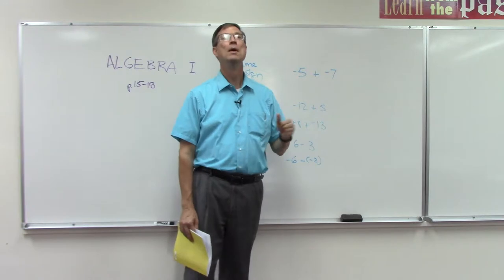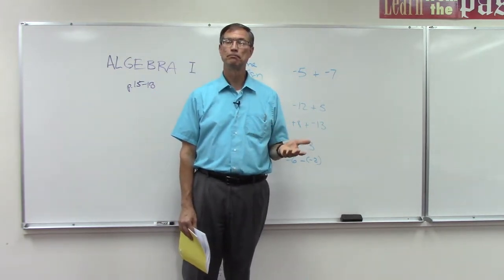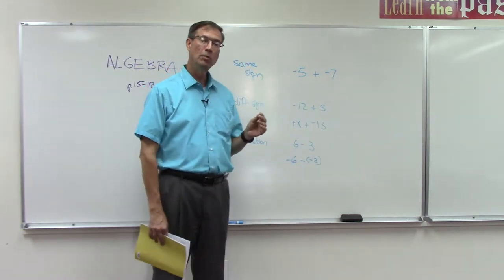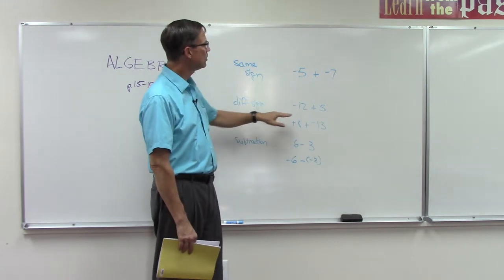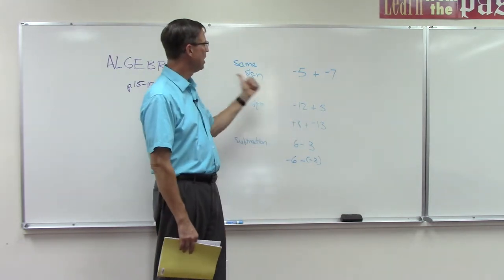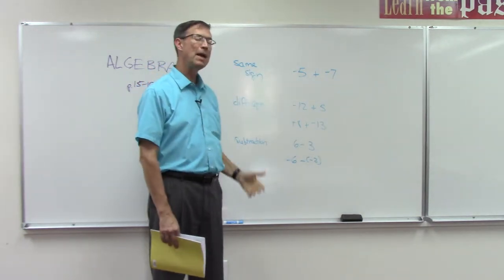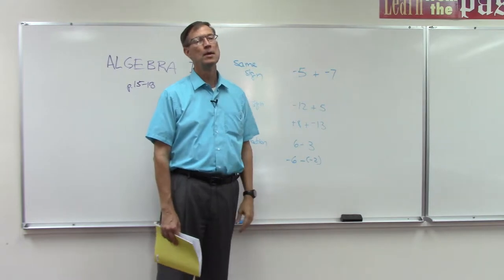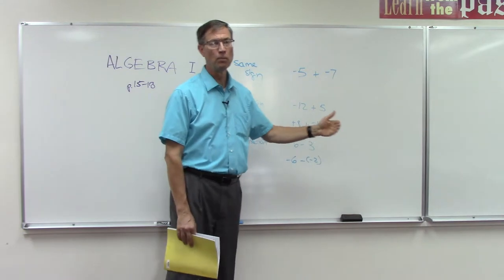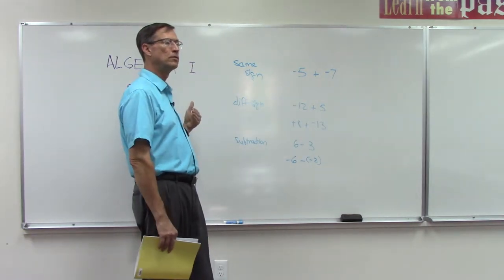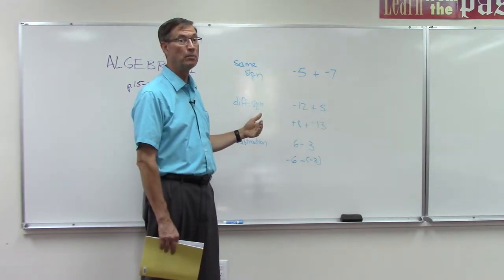Now it gets trickier when the signs are different, and we can try to picture this on a number line. If I started way back here at negative 12 and then I come forward 5, then I'm actually at negative 7. Picture, you know, being at the zero mark on the football field and you go back 12 yards in the negative zone, and then you gain 5 yards. Well, you're still 7 yards behind where you want to be, so you're still at negative 7.